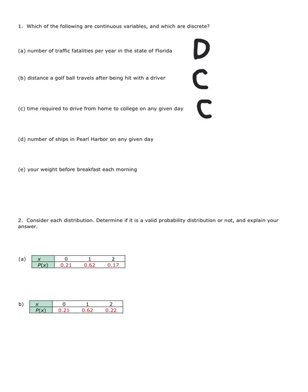D, number of ships in Pearl Harbor on any given day. Assuming the ones that are still good boats, ships, that's going to be discrete.